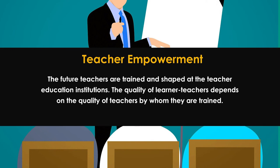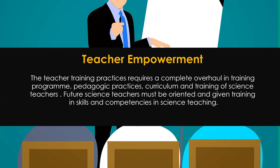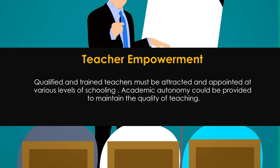The following are recommended for teacher education institutions: teacher training practices require a complete overhaul in training programs, pedagogic practices, curriculum, and training of science teachers. Future science teachers must be oriented and given training in skills and competencies in science teaching. Teachers who have school teaching experience must be appointed as science teacher educators. Recruitment modalities must be modified to appoint qualified teachers. Qualified and trained teachers must be attracted and appointed at various levels of schooling. Academic autonomy could be provided to maintain the quality of teaching.